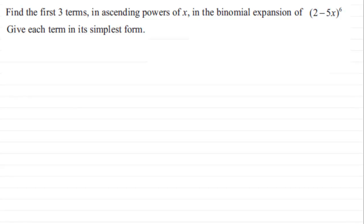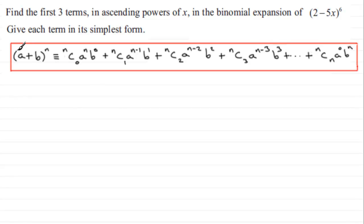If you've got (a + b) all to the power n, where n is a positive integer, then it's given by: nC0 times a to the power n times b to the power 0, plus nC1 times a to the power (n minus 1) times b to the power 1, and so on.